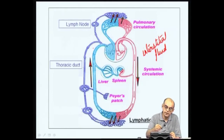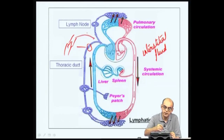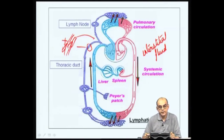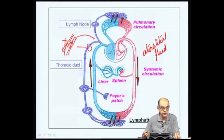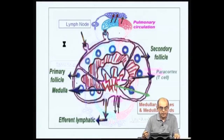For example, if lymph is going towards the duct, there is a valve such that when the thoracic duct is pushed by muscular movements, this one-way valve prevents reverse flow. This unidirectional flow also occurs while the lymph fluid is draining into the lymph nodes. Now let us look at the structure of a lymph node.